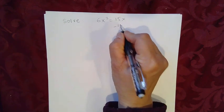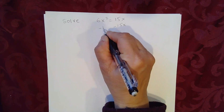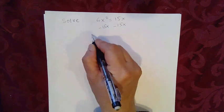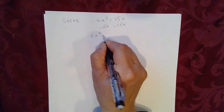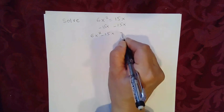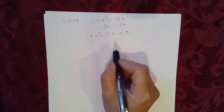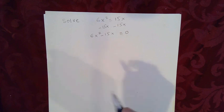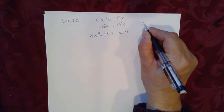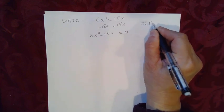So subtracting 15x on both sides of the equation, we get 6x squared minus 15x equal to 0. Now since this is a quadratic equation with no constant, what we need to do is we need to find the GCF, which is the greatest common factor.